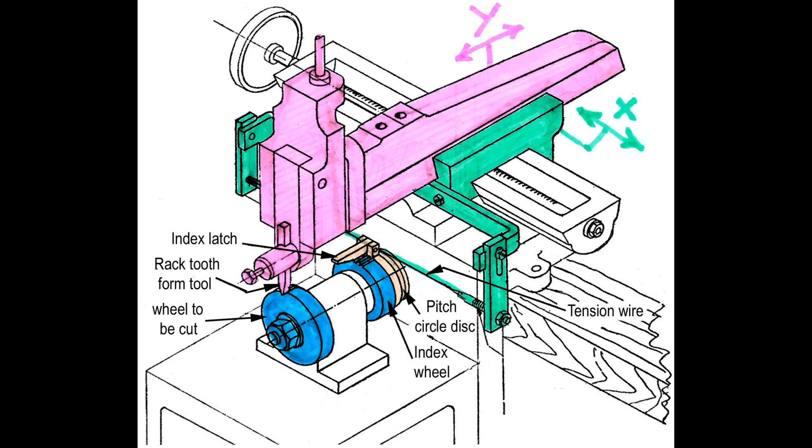True involute gear cutting with the shaper. The idea is to use the shaper as a rack-type gear cutting machine using a single tooth rack.